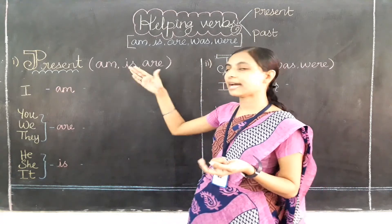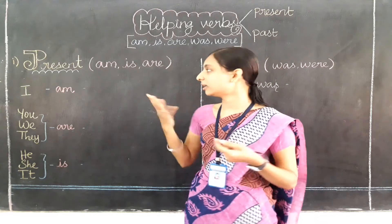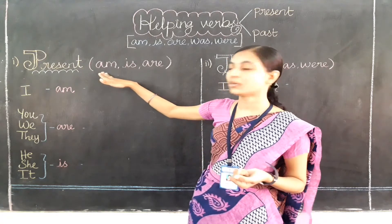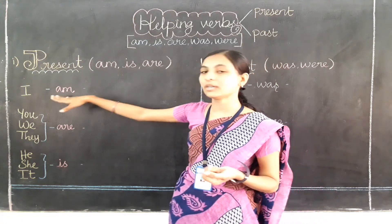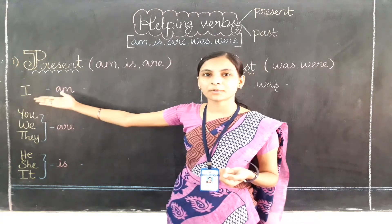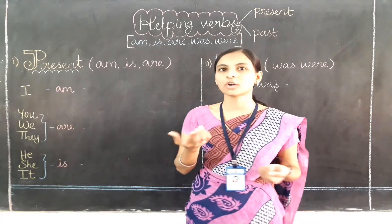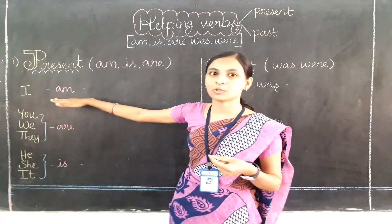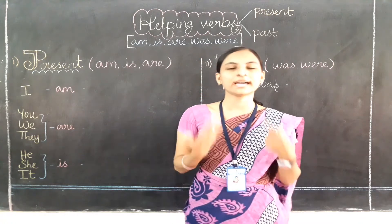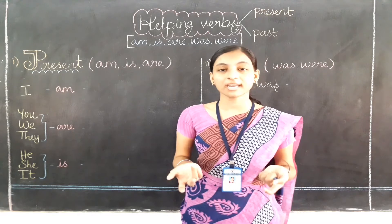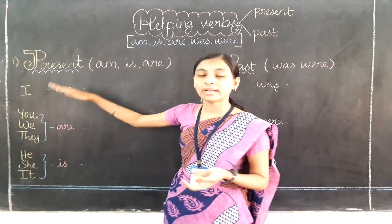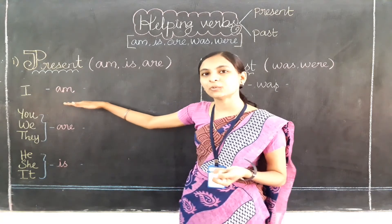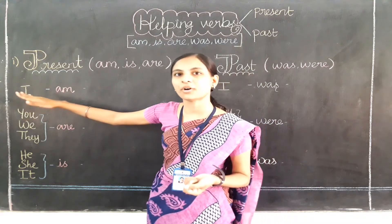Let's learn where to use am, is, are — to which subject or pronoun. 'Am' can be used only with the pronoun 'I'. Whenever you are making a sentence with 'I' as a subject, you are going to use 'am'. For example: I am walking. Remember that 'am' can be used only for the subject 'I'.